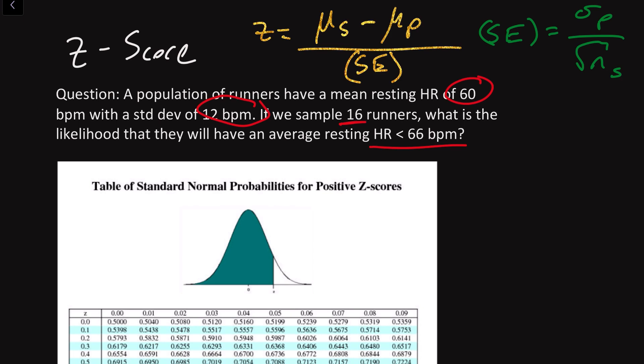With that out of the way, we can now look at the terms that are given to us in our problem statement. 60 beats per minute would map to the mu_P term, the average of our population, and 66, less than 66 beats per minute, is what's going to map to the mu_S term of our Z formula.